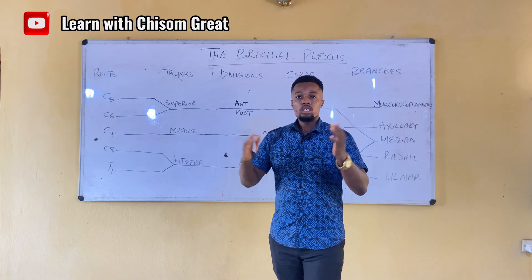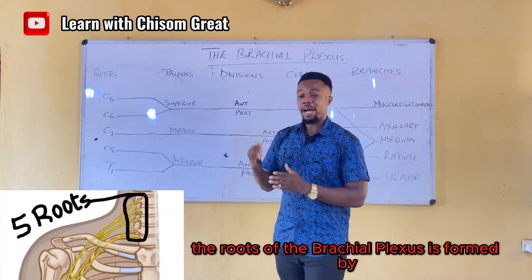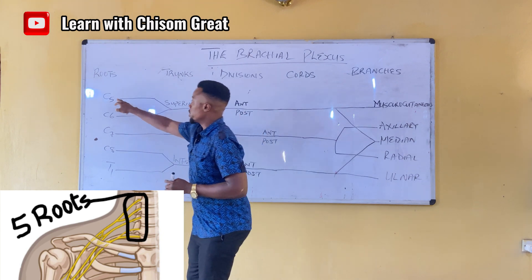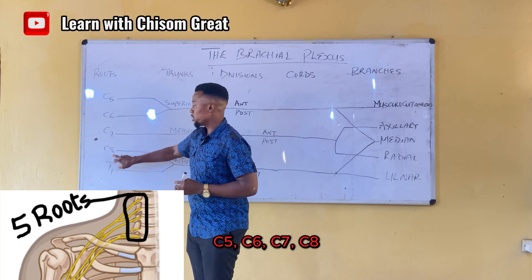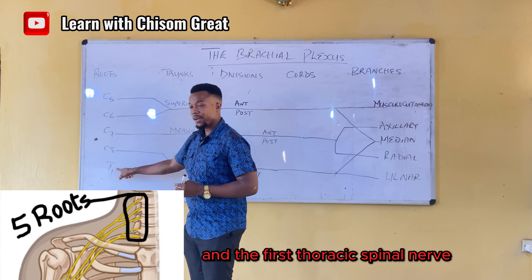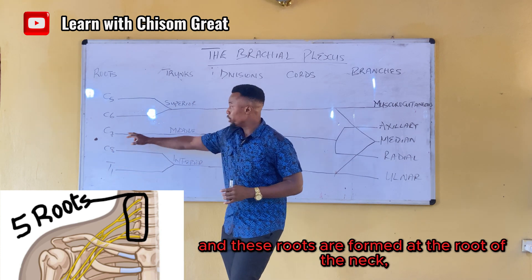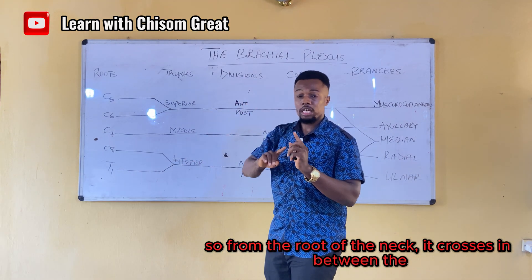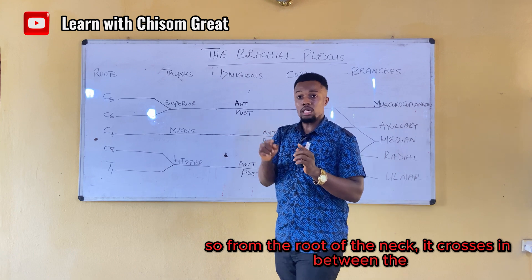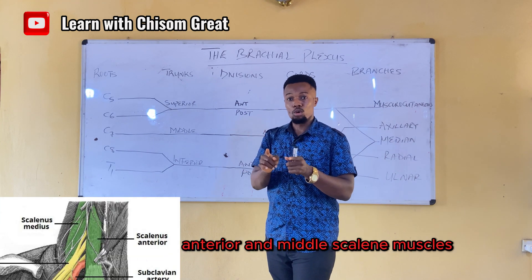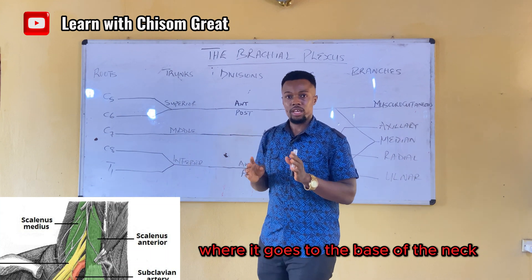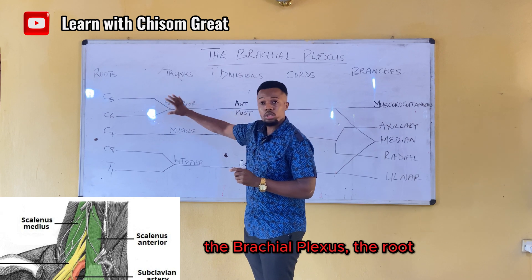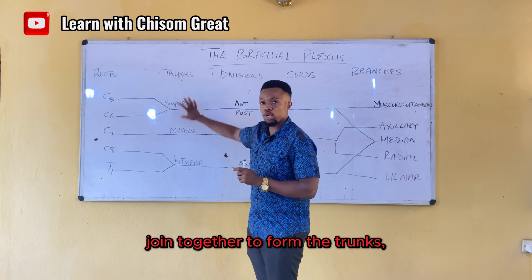Let's begin with the roots. The roots of the brachial plexus are formed by the anterior division of the cervical spinal nerves C5, C6, C7, C8, and the first thoracic nerve, and these roots are formed at the root of the neck. From the root of the neck, it crosses in between the anterior and the middle scalene muscle, where it goes to the base of the neck. At the base of the neck, the roots join together to form the trunks.